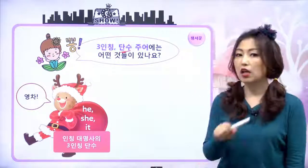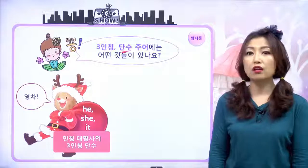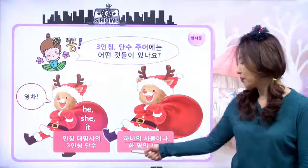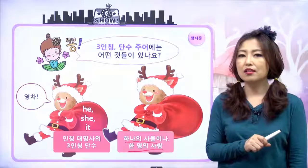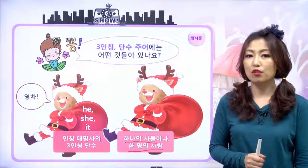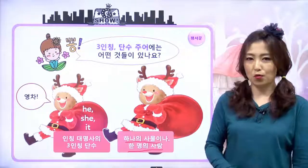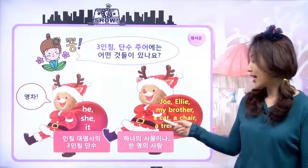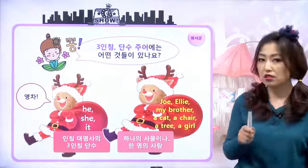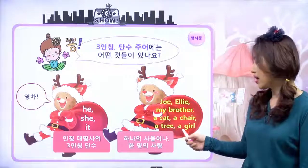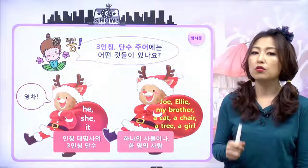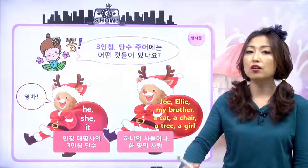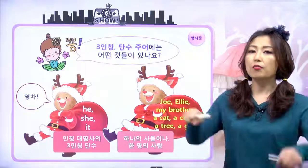인칭 대명사에 3인칭 단수가 he, she, it 하고 또 있나요? 또 3인칭 단수 주어가 있어요? 굉장히 많아요. 어떤 게 있냐면 하나의 사물이나 한 명의 사람을 뜻할 때는 그거는 모두 다 3인칭 단수나 사물이라고 보면 돼요. 나, 너를 제외하고. Joe, Ellie, my brother, a cat, a chair, a tree, a girl 해서 이렇게 한 명 혹은 하나의 사물이나 사람일 때 우리가 3인칭 단수 그리고 그것이 주어가 됐을 때 어떤 일이 일어난다?